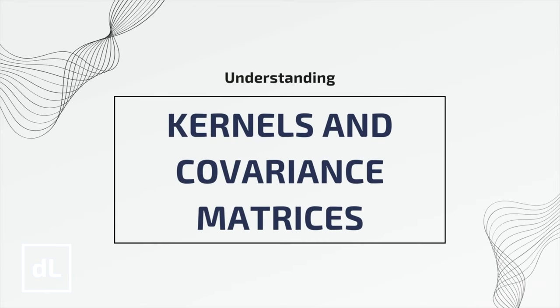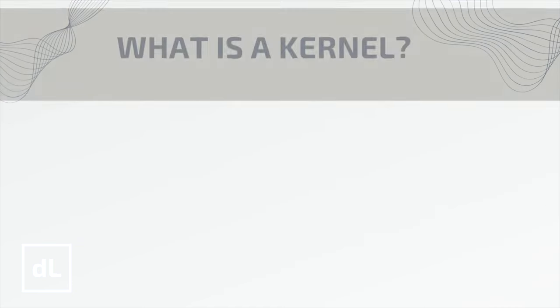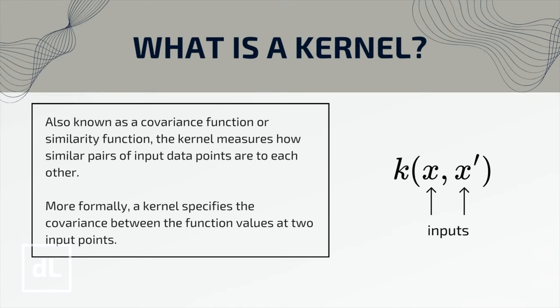The kernel cookbook is a comprehensive guide to understanding the different types of kernels and their applications. This will allow you to choose the most appropriate kernel for your problem and model complex relationships more effectively. A kernel, also known as a covariance function or similarity function, measures how similar pairs of input data points are to each other — more formally, it specifies the covariance between function values at two input points.